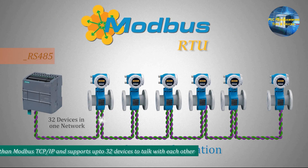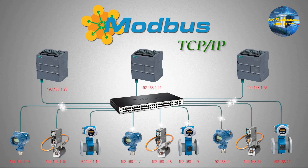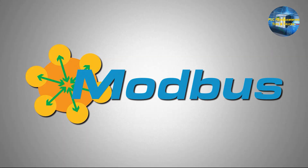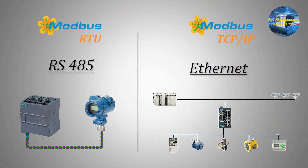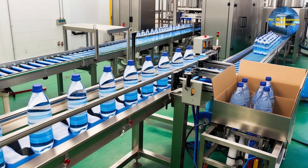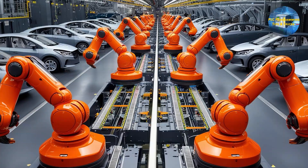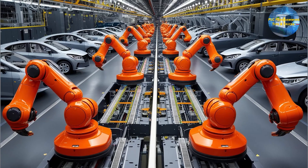To sum it up: RS-485 is great for legacy systems or environments where you don't need super-fast communication but do need reliability over long distances. Modbus TCP-IP is perfect for modern, large-scale systems where you need faster communication and have lots of devices to manage. So to wrap things up, Modbus is a communication protocol that allows different devices in an industrial setup to talk to each other. RS-485 is older but still reliable, and TCP-IP is the faster, modern version. If you're dealing with older systems or need to run cables over long distances, RS-485 is a great choice. But if you're setting up a modern factory with lots of devices and need high-speed communication, Modbus TCP-IP is the way to go.